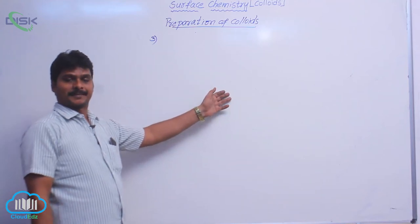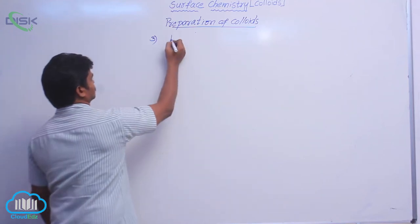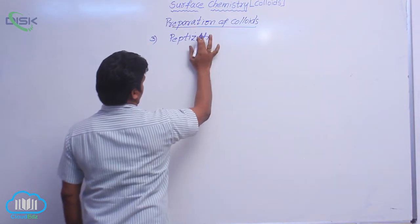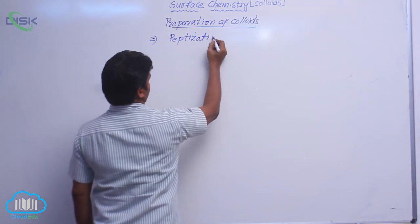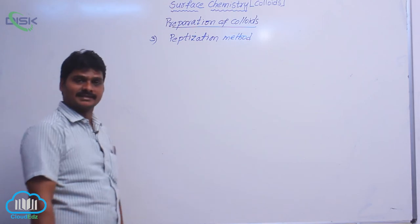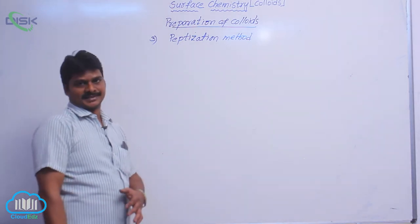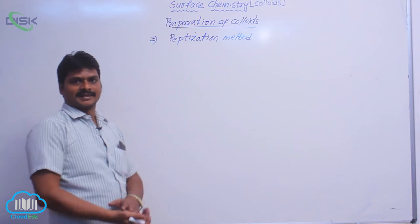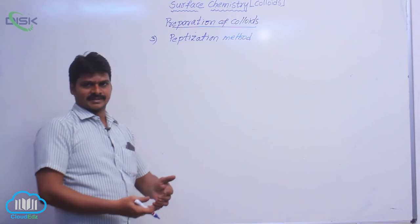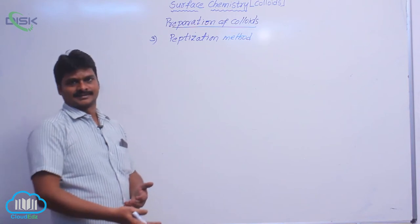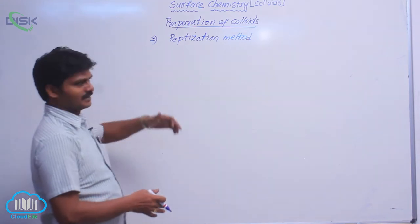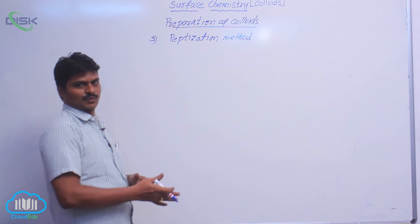Let us see the third method: the peptidization method. Previously we have discussed two methods — chemical methods and the second one, the Bradix-Arch method. In chemical methods, a colloidal solution is prepared by a chemical reaction. In the Bradix-Arch method, metal salts — generally gold salt, copper salt, and silver salt — are prepared.